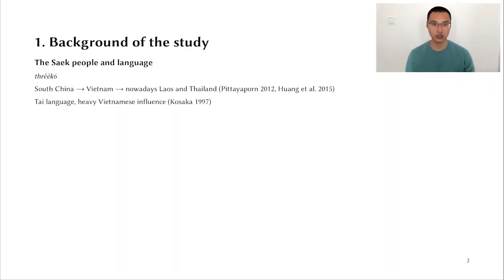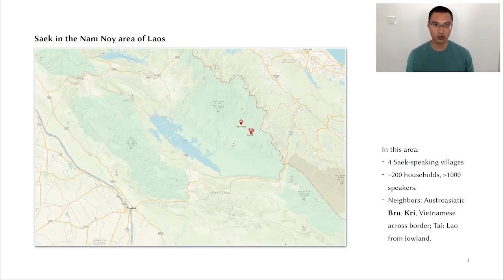People in the Saek language. The Saek people refer to themselves as Czech and they are believed to have originated from China, moved across Vietnam and eventually settled in nowadays Laos and Thailand. Their language, Thanh Chek, is a Thai language but due to their migration history, it has been heavily influenced by Vietnamese.